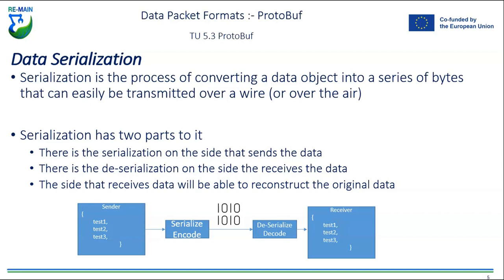Data serialization has two parts: serialization on the side that sends the data, and deserialization on the side that receives the data. The receiving side reconstructs the original data based on a predefined format. In this example, data in JSON format — test one, test two, test three — gets encoded into ones and zeros, transferred over a line, then deserialized on the other side to reconstruct the original data.